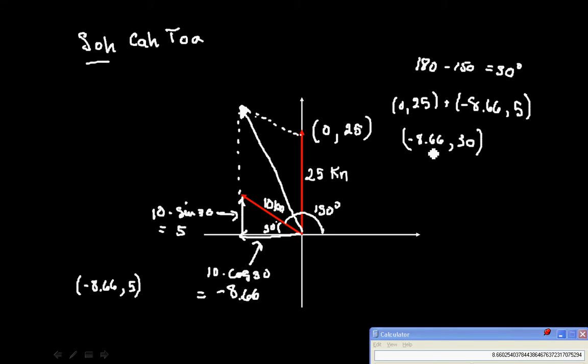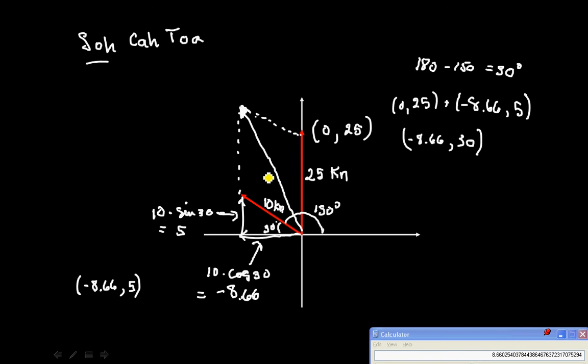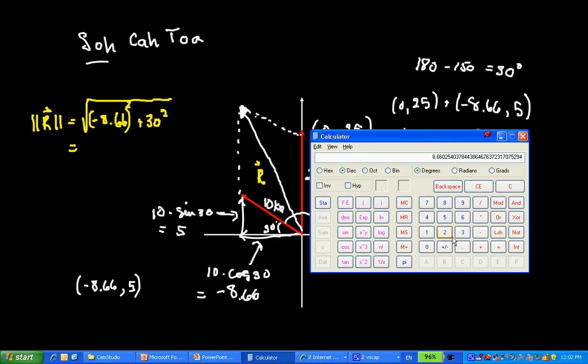Now that I have the components of my resultant, I can find its magnitude, which I will do in yellow. So let's change the ink color to yellow. The magnitude of this, I'll call this r for resultant. So the magnitude of r is equal to, and I do Pythagorean theorem with the two components over here, it's negative 8.66 squared plus 30 squared square root.